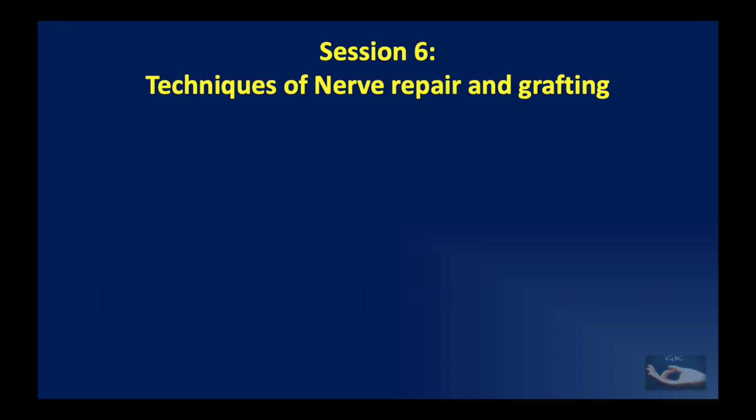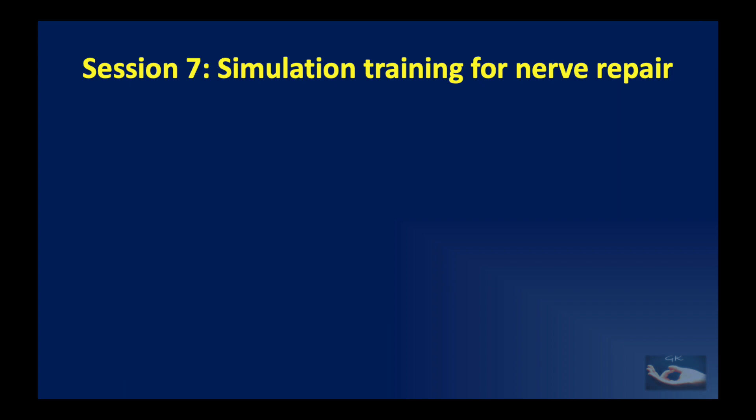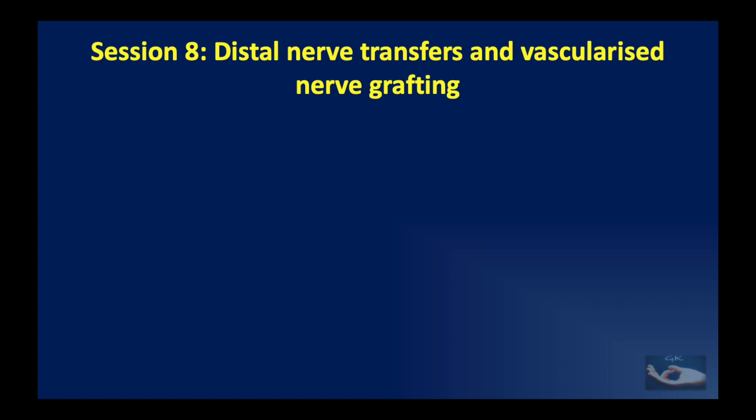Then we go on to the techniques of nerve repair and grafting, where we discuss the nitty-gritty of nerve repair: in a clean cut of the nerve, how to repair it, what suture material and technique to use, how to manage ragged edges, neuroma, and proximal glioma, what to do if there is a nerve gap, how to handle a neuroma in continuity, and the role of nerve conduits. Session 7 will be a simulation training practical module to learn how to suture a cut nerve, along with a description of the instruments needed.